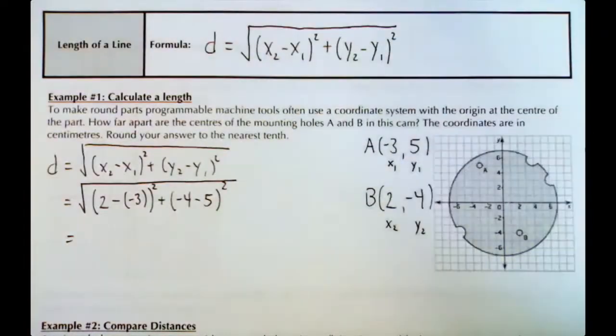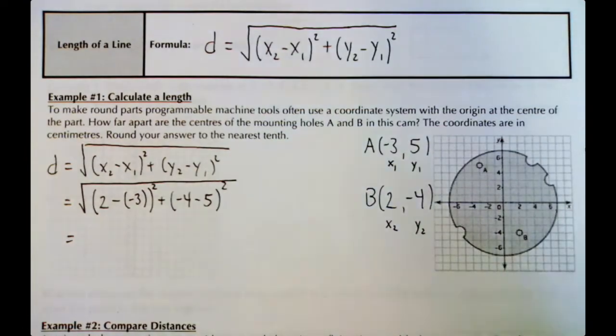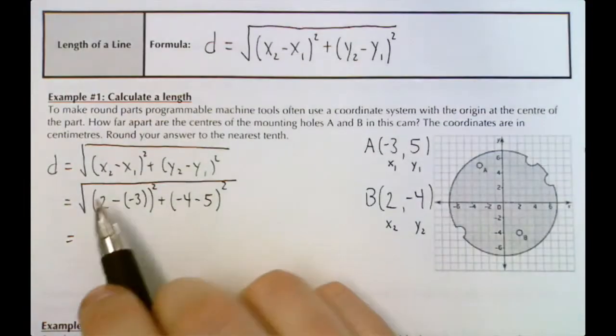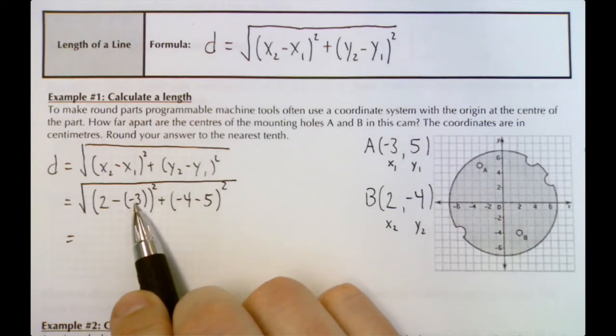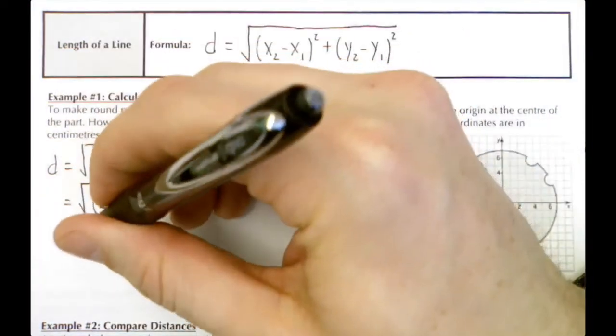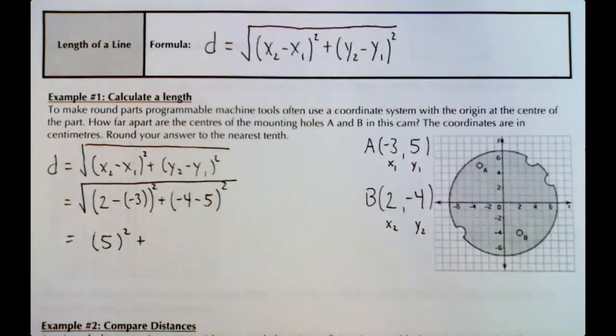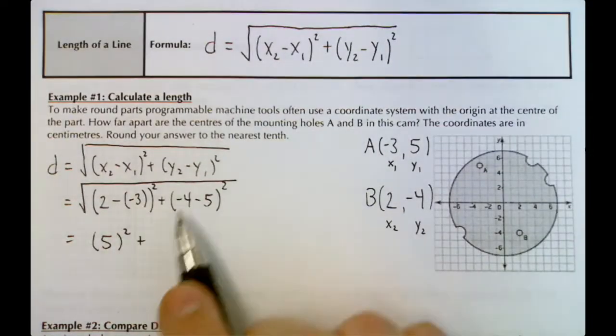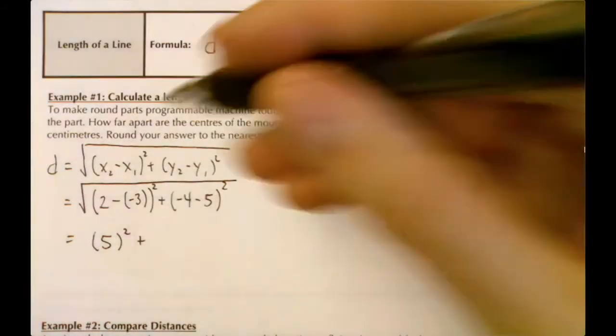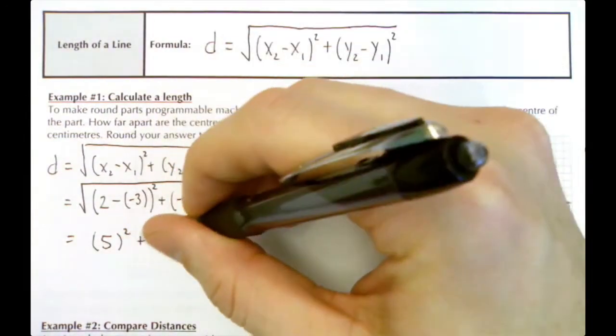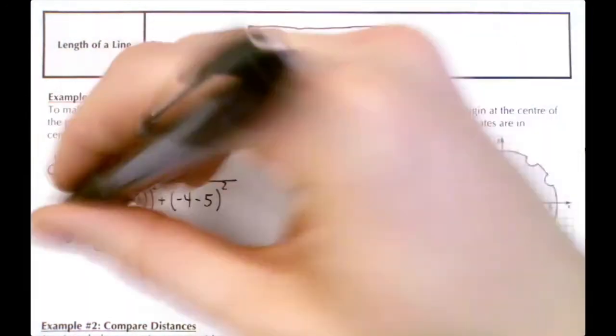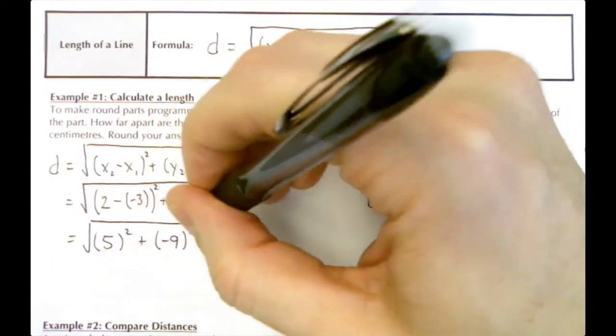Let's do a little bit of math here. 2 subtract -3 is 5, so our first bracket is just going to be 5². Our second bracket: -4 minus 5 is -9, so we've got (-9)², square root that answer.